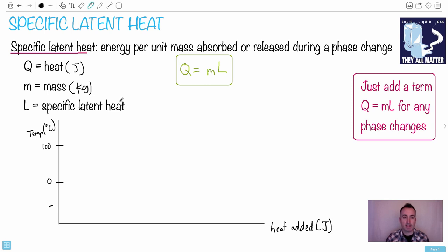The specific latent heat is this property - it's the energy that's absorbed or released during a phase change. It tells you how much energy is needed to change phases. For the units, if I get L by itself, I have to get Q divided by M, so that would be joules per kilogram.